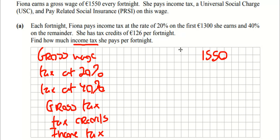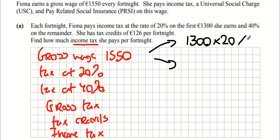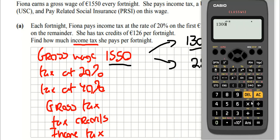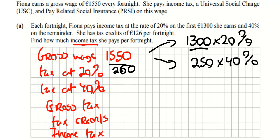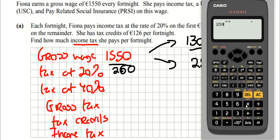You have 1550, and that's broken up into two parts. It's broken up at 1300 at 20% and the other one - how much more money do you make above 1300? You make 250 and that extra 250 gets charged at 40%. So we're going to get 20% of 1300, 260, and then 40% of 250, and that's 100 quid.